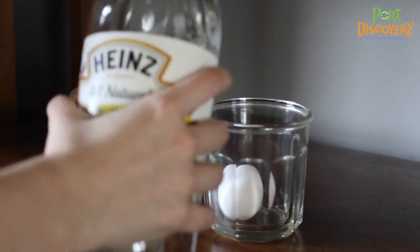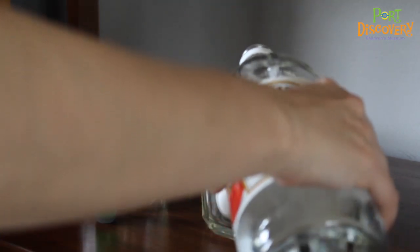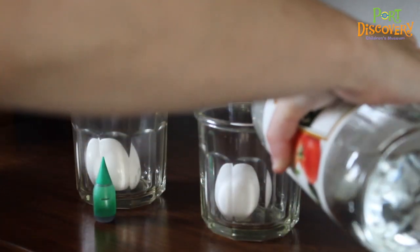Gently place the egg into the glass and pour enough white vinegar until the egg is completely submerged.